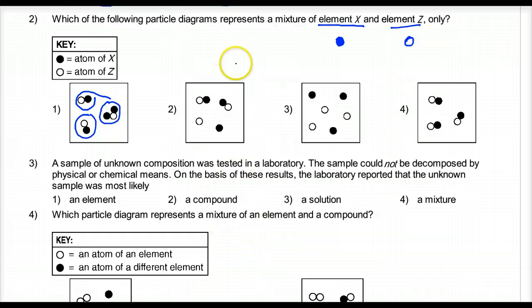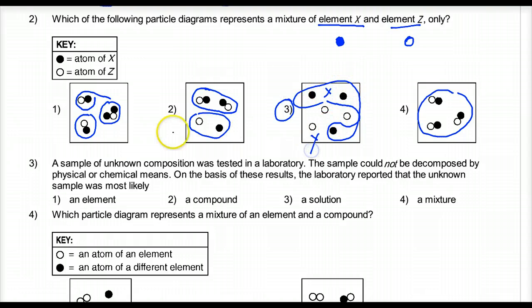Number two is another compound, but then atoms. Here is a mixture of different types of elements, a group of the same type. And then here I have the same compound, same molecules. So the answer is just element X and element Z would be choice 3. Here is element X as the dots, and the Z's are here. So 3 is the best answer.